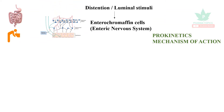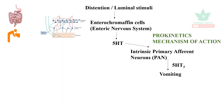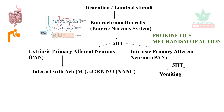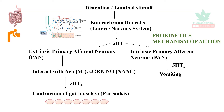Distension or abdominal swelling induces the intrinsic nervous system to release 5-hydroxytryptamine. It has two pathways: through the intrinsic primary afferent neuronal pathway, 5-hydroxytryptamine acts on 5-HT3 receptors, leading to emesis. Through the extrinsic primary afferent neuronal pathway, it interacts with neurotransmitters such as acetylcholine, calcitonin gene-related peptide, and nitric oxide, acting at 5-HT4 receptors, leading to contraction of the gut muscles.